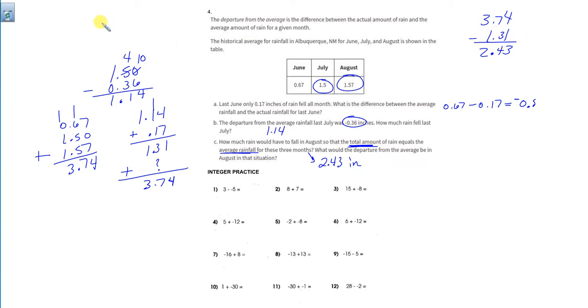So we'll do that up here, 2.43 minus 1.57. We have to borrow from the 2, make that a 14, make it a 13, and then this a 13. 6, 8, and 1. So that would be plus, we'd have to be plus 1.86 over our average to be able to make that happen.